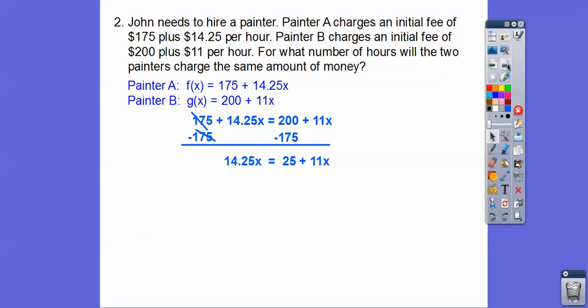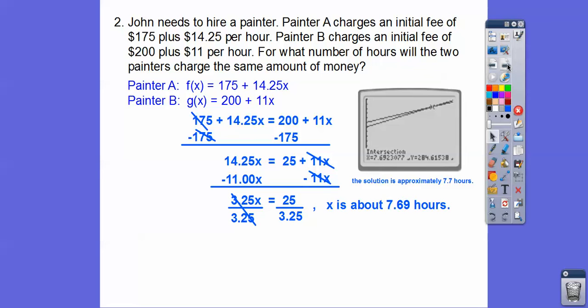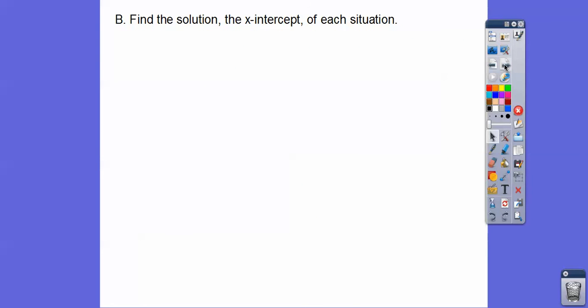Okay, so subtract 175. We get 14.25x equals 25 plus 11x. Subtract 11x from both sides. Now we divide by 3.25 and we get about 7.69 hours. Remember the graph showed 7.7, so 7.7 hours right there. I think this lesson is way easier than the last one. But I have to teach you what the textbook's doing. They wanted you to build tables, so that's what we did.